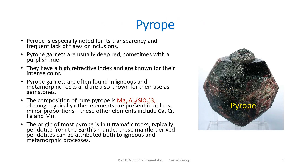Pyrope is especially noted for its transparency and frequent lack of flaws or inclusions. Pyrope garnets are usually deep red in color, sometimes with a purple hue, and are known for their very high refractive index and intense color. They are often found in igneous and metamorphic rocks and are valued as gemstones. The composition of pure pyrope is Mg3Al2(SiO4)3, although other elements such as calcium, chromium, iron, and manganese are commonly present in minor proportions. Pyrope occurs in ultramafic rocks, typically peridotite from the earth's mantle, formed by both igneous and metamorphic processes.